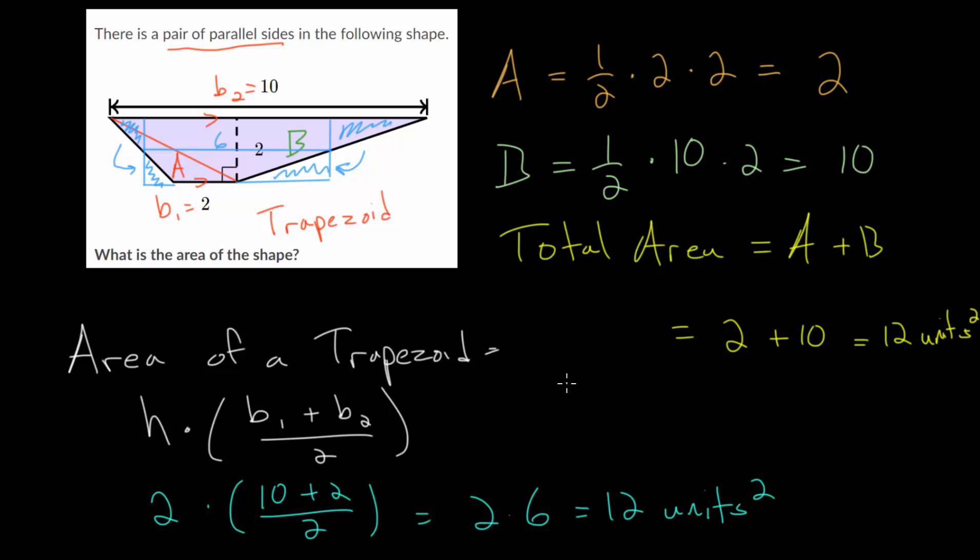But in a later video, we'll look at how to actually derive this formula so that you don't have to memorize it, so that you can understand it from basic principles. But the general idea is you can always turn these trapezoids into rectangles. So let's look at one more example problem, and we'll use this formula to check since the other example problem is also going to be a trapezoid.